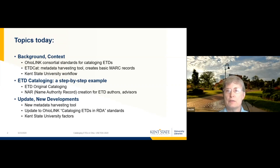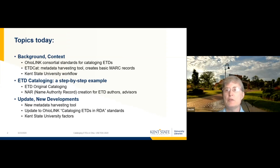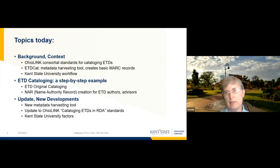The tech currently in use we call ETD-CAT, the consortium metadata harvesting tool, which creates basic MARC records from student-supplied metadata. I'll talk about the steps in KSU's workflow, which utilizes MARCEdit, OCLC constant data, and a tag team approach to cataloging. Peter will demonstrate how we go about originally cataloging ETDs, pointing out the distinctive intellectual challenges they pose. And since KSU is a NACO library, he'll also demonstrate how we create a typical name authority record for an ETD author. I'll close with an update on the upcoming successor to the OhioLINK ETD metadata harvesting tool and the concurrent initiative to reassess and update the consortium ETD cataloging standards. The slides will be available on the conference website with speaker's notes and some additional reader's notes.